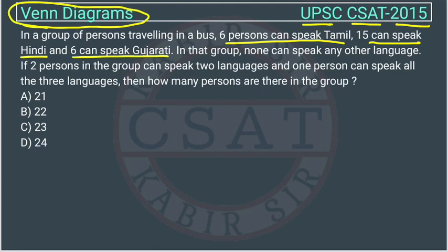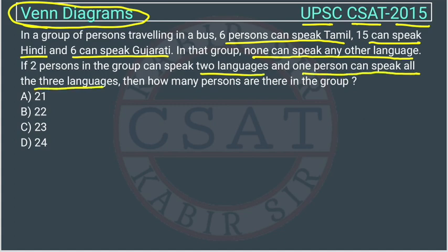There will be 3 Venn diagram circles for each language. In that group, none can speak any other language — meaning all are speaking some language. If 2 persons in that group can speak 2 languages and 1 person can speak all 3 languages, then how many persons are there in the group?